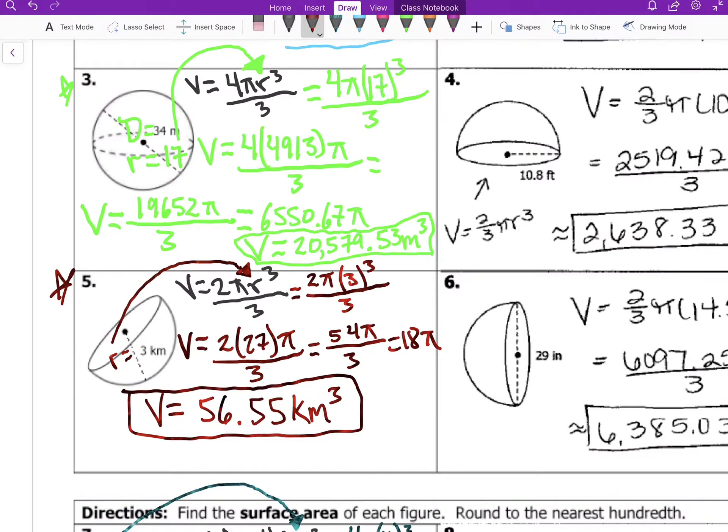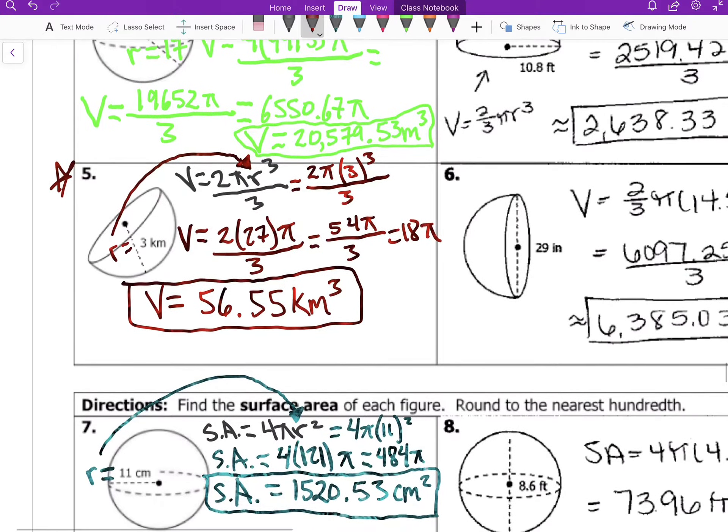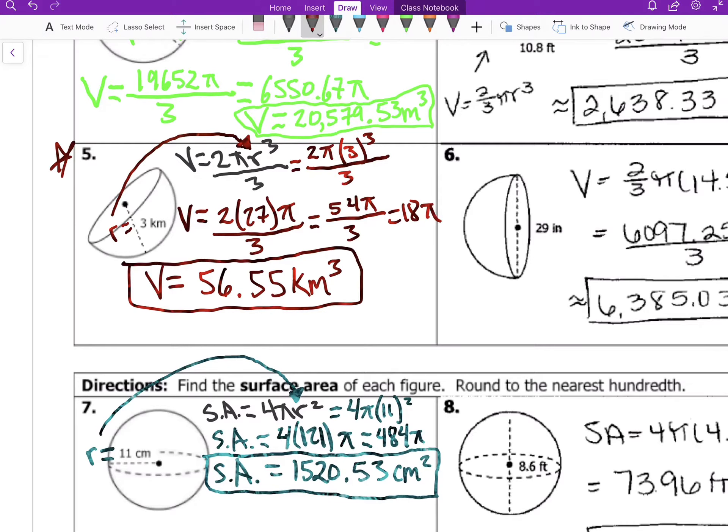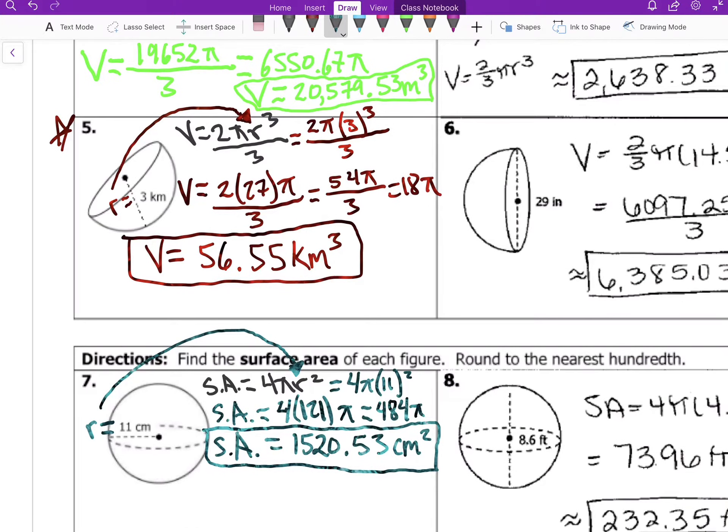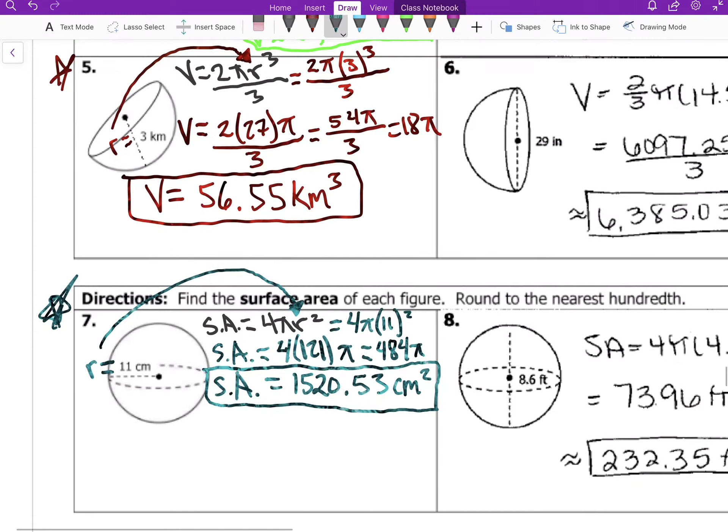Moving on, number seven. This is going to be surface area, so surface area is going to be a little different. It's just 4πr² - that's the formula. You have r, plug it in. 11 times 11 is 121, times 4 is 484, times π. Multiply π, you get 1520.53 centimeters squared. And that is the outside of the sphere itself, so just the surface, like the skin of a basketball or baseball, soccer ball, whatever sport you play.